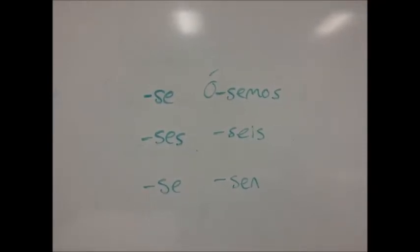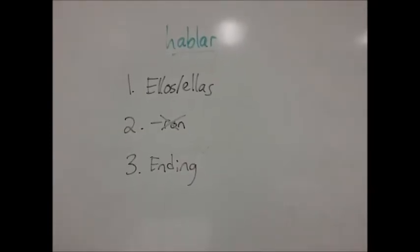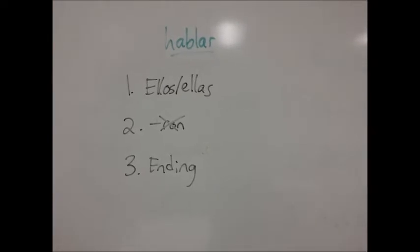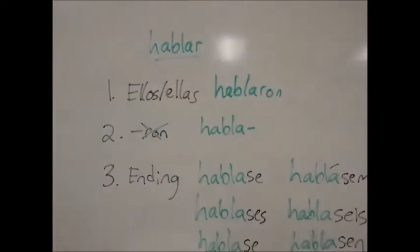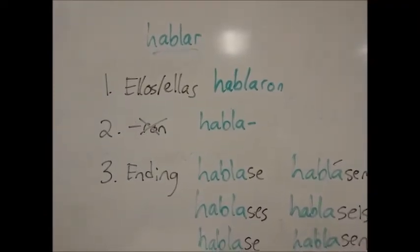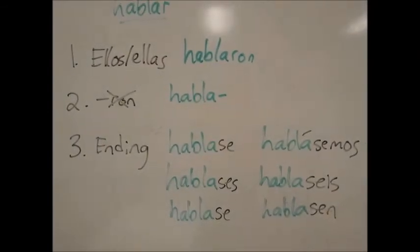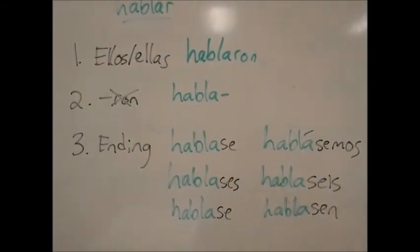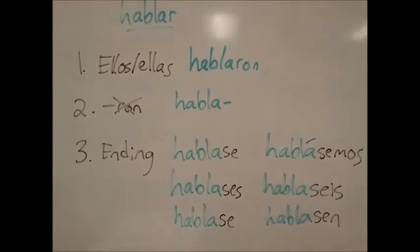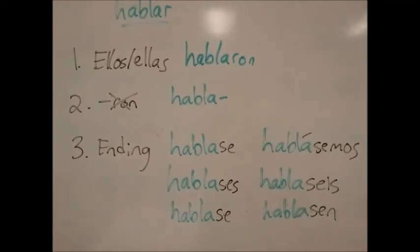Let's do an example with HABLAR. First, we need the Ellos, Ellas, Ustedes form in the preterite tense. Next, we take off the RON, so we end up with HABLAR. Then we add the correct ending. The possible endings are: HABLASE, HABLASES, HABLASE, HABLÁSEMOS, HABLASEIS, HABLASEN. And that's how you form the Literary Imperfect Subjunctive.